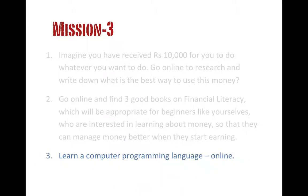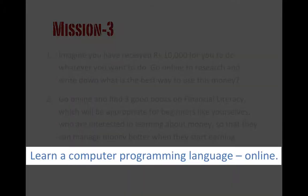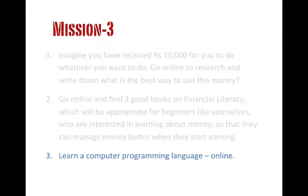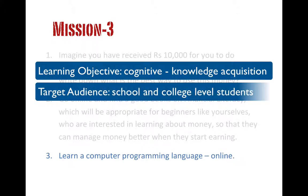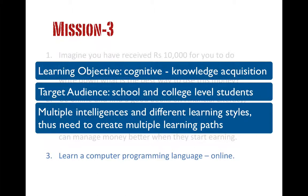Let's look at our third case: learn a computer programming language online. That is, find web-based learning resources to learn a computer programming language. The desired learning outcome is still in the cognitive domain — knowledge acquisition. Our target audience is school and college level students who have multiple types of intelligences and different learning styles. Thus, we need to find resources to create multiple learning paths for them.